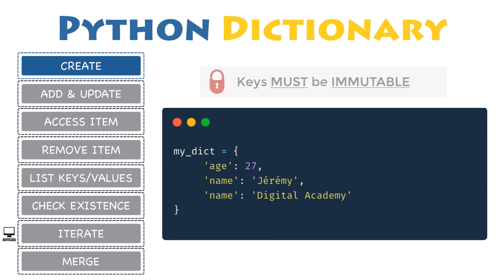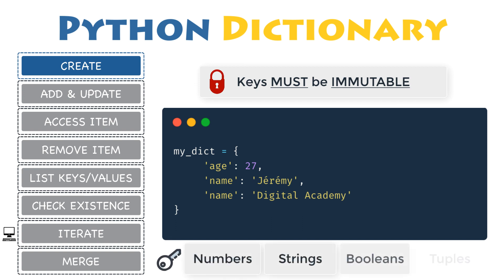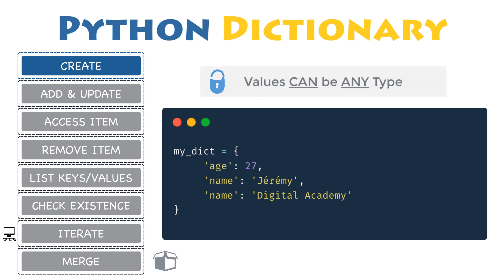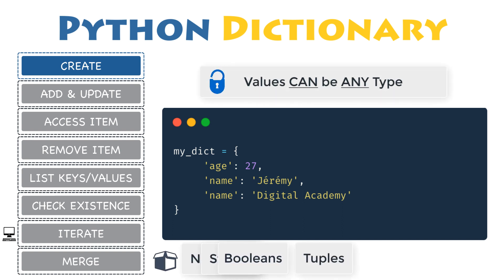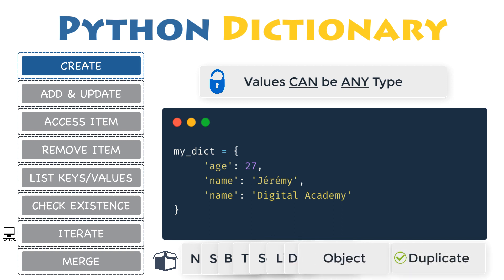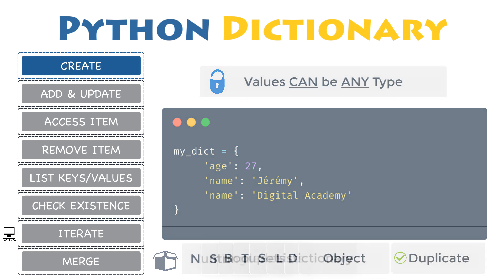Keys must be of immutable type. You can use any object of immutable type as dictionary keys, such as numbers, strings, booleans, or tuples. Otherwise, an exception is raised when a mutable object is used as a key. Values can be of any type — there are no restrictions on dictionary values. A dictionary value can be any type of object and can even appear in a dictionary multiple times.